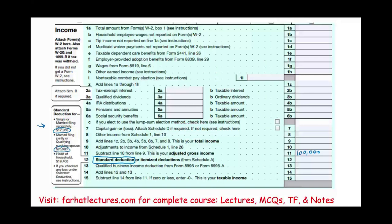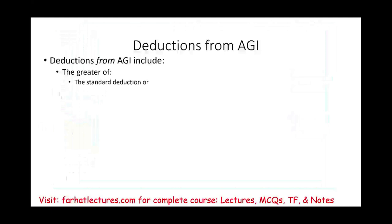This number is printed on the form. You don't have to use the standard deduction — alternatively, you can use your itemized deduction, which goes on Schedule A. You will take the greater of the standard deduction or your itemized deductions.